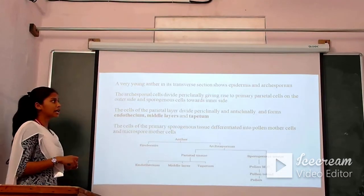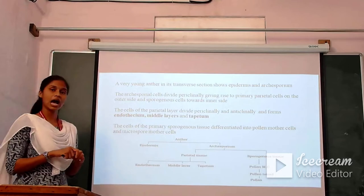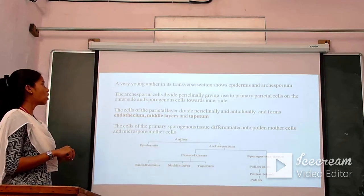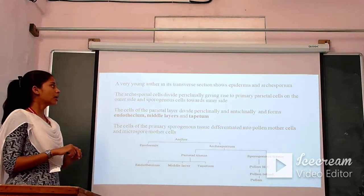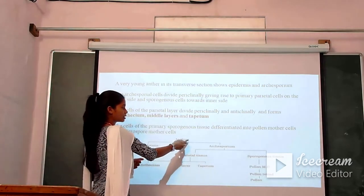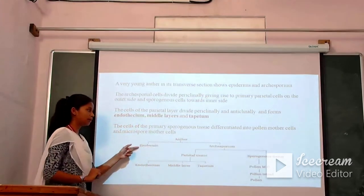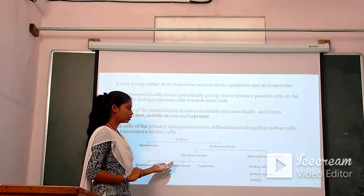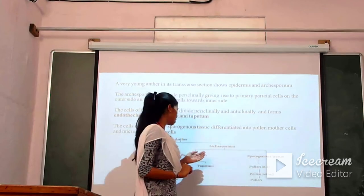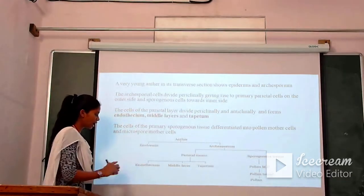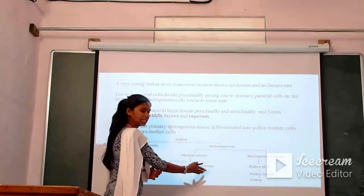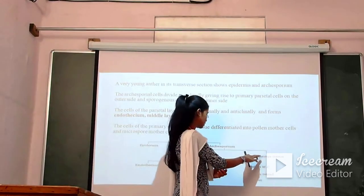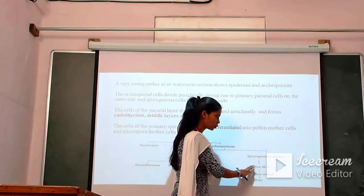A very young anther in its transverse section shows epidermis and archesporium. The archesporium cells divide periclinally, giving rise to primary parietal cells on the outer side and sporogenous cells towards the inner side. When you take a transverse section of this anther you see epidermis and archesporium. The archesporium divides into parietal tissue (outer) and sporogenous tissue (inner). This parietal tissue again divides and develops into endothecium, middle layer, and tapetum — these three layers form the anther wall.